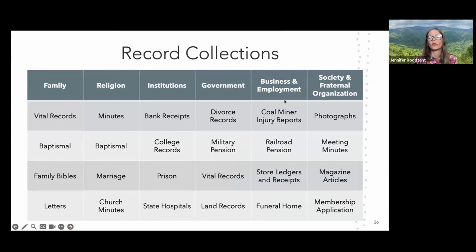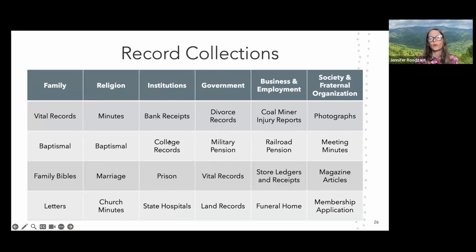Jurisdictions include the state, the United States (federal), a county, the military, family sources, societies, institutions, church records, and legal records. Within family and religion you could find baptismal records; institutions could have prison records; government could have vital records; business and employment could have coal miner records; and societies could have meeting minutes that place your ancestor in a certain area. General ledgers at historical societies or local archives are another option — I just found one where my ancestors were in an area that suffered record loss from the 1906 earthquake, and I was able to find a general ledger that gave me their address.